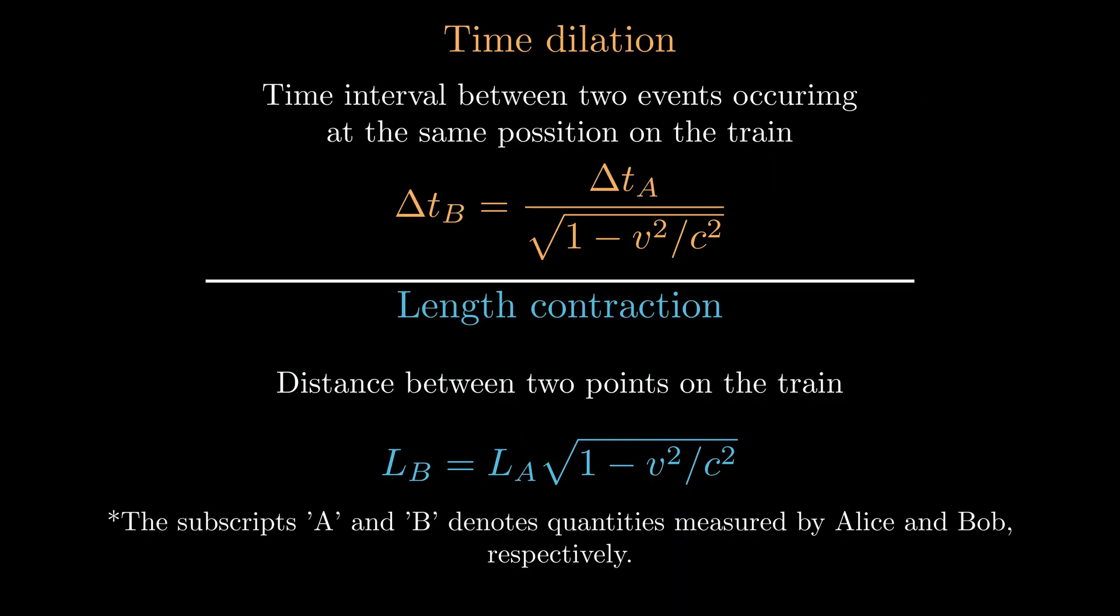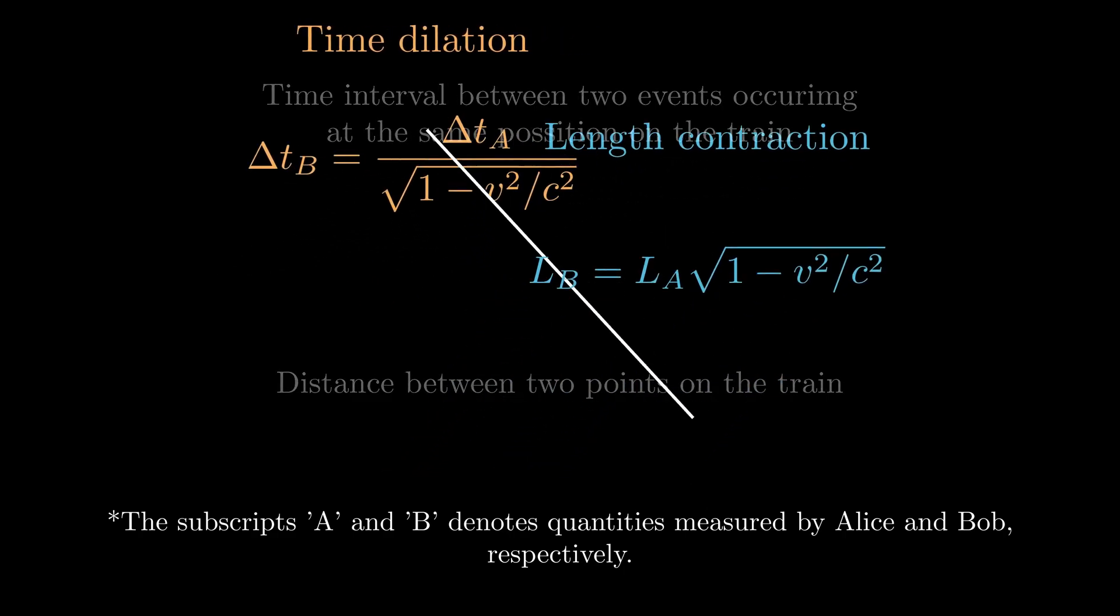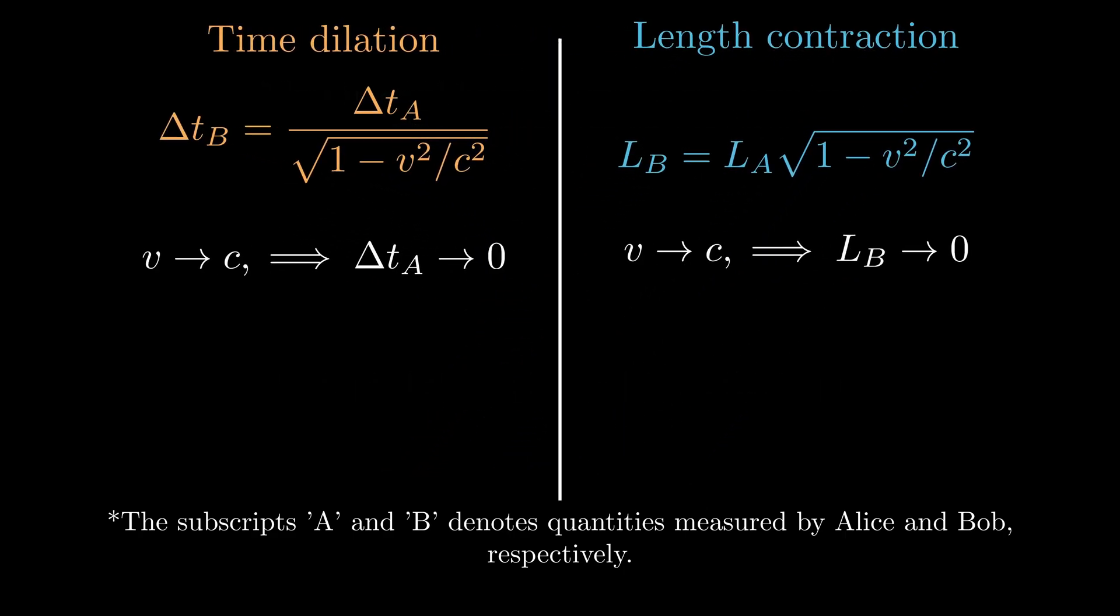The equations for time dilation and length contraction show two important consequences. As the train's speed approaches c, Bob sees that its length shrinks to zero in the direction of motion and its clocks slow to a stop.